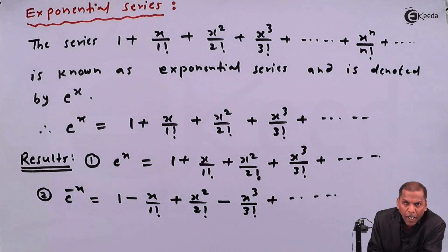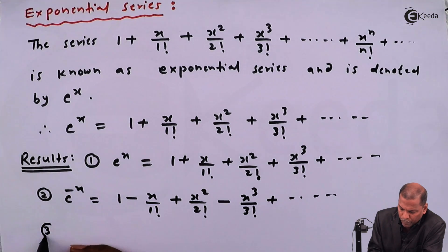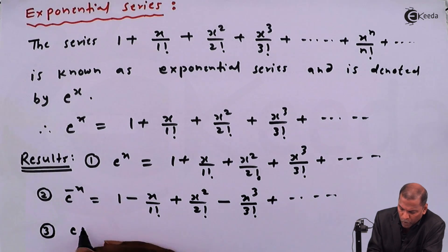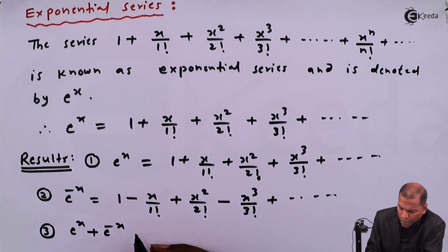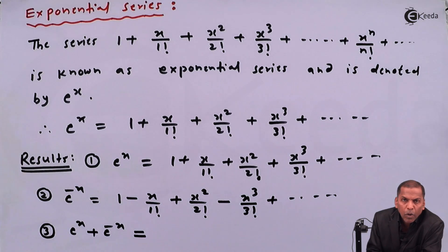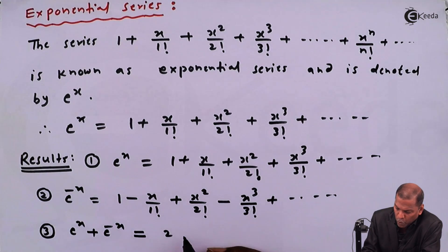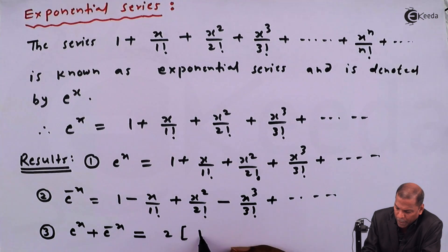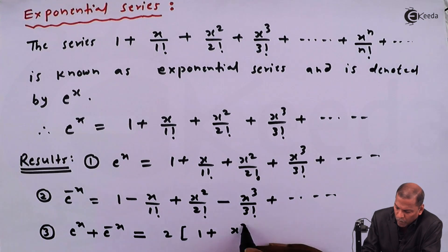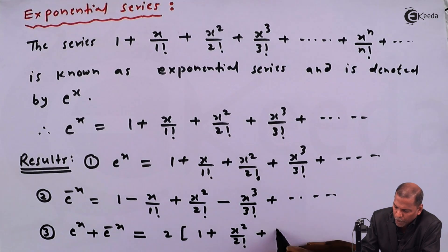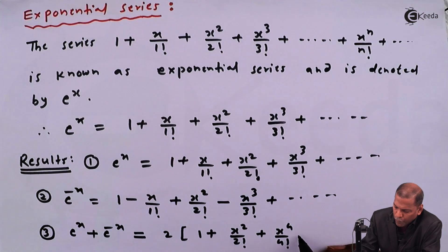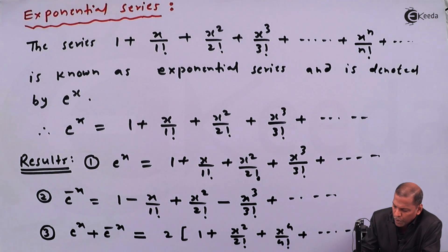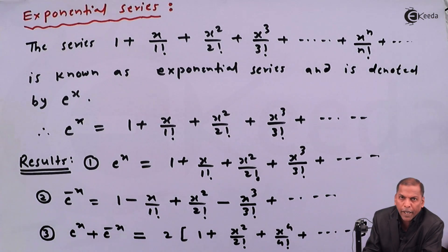Now adding equation 1 and 2, we get result 3: e raise x plus e raise minus x is equal to 2 times, in bracket, 1 plus x squared upon 2 factorial plus x raise 4 upon 4 factorial, and going on, bracket complete.